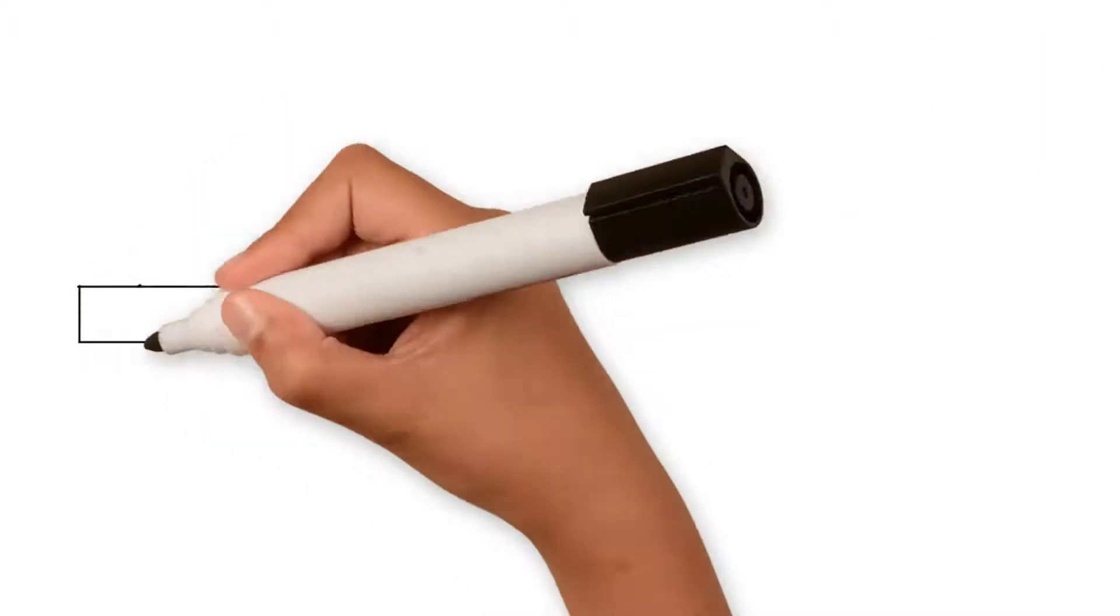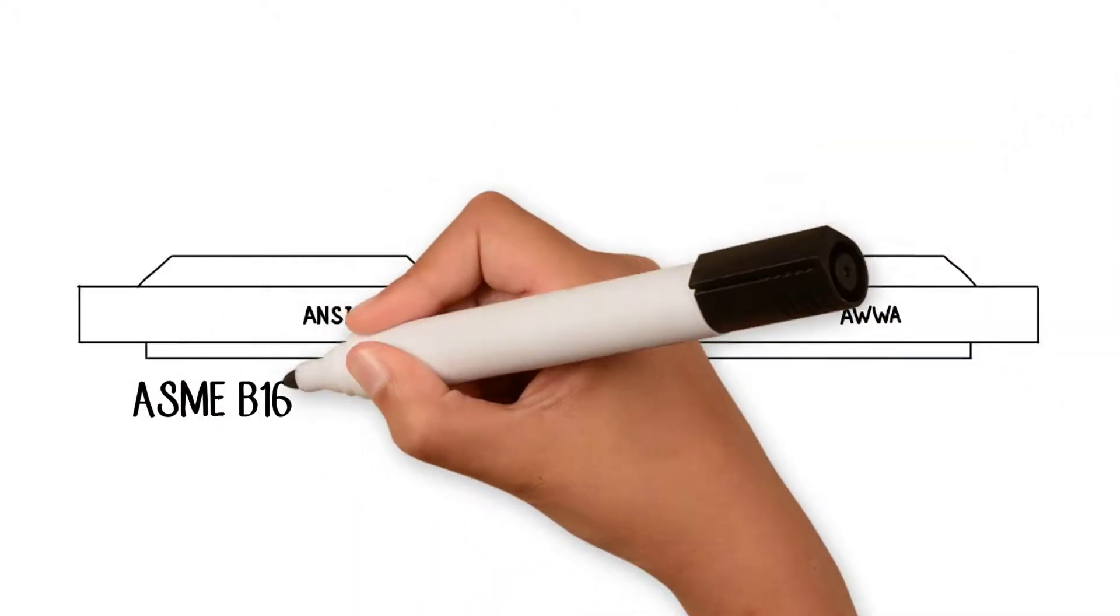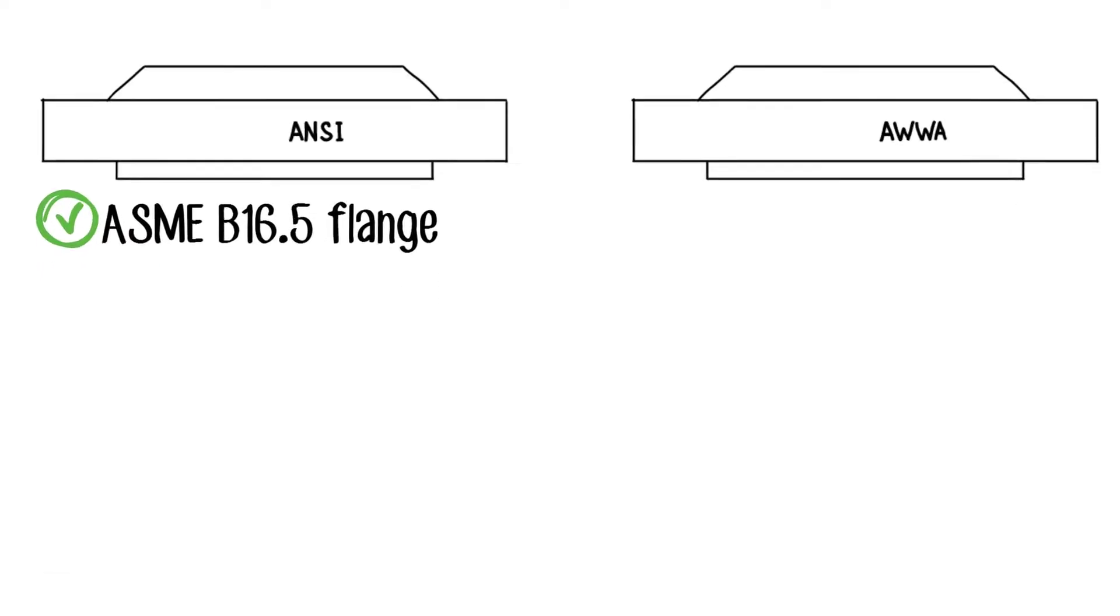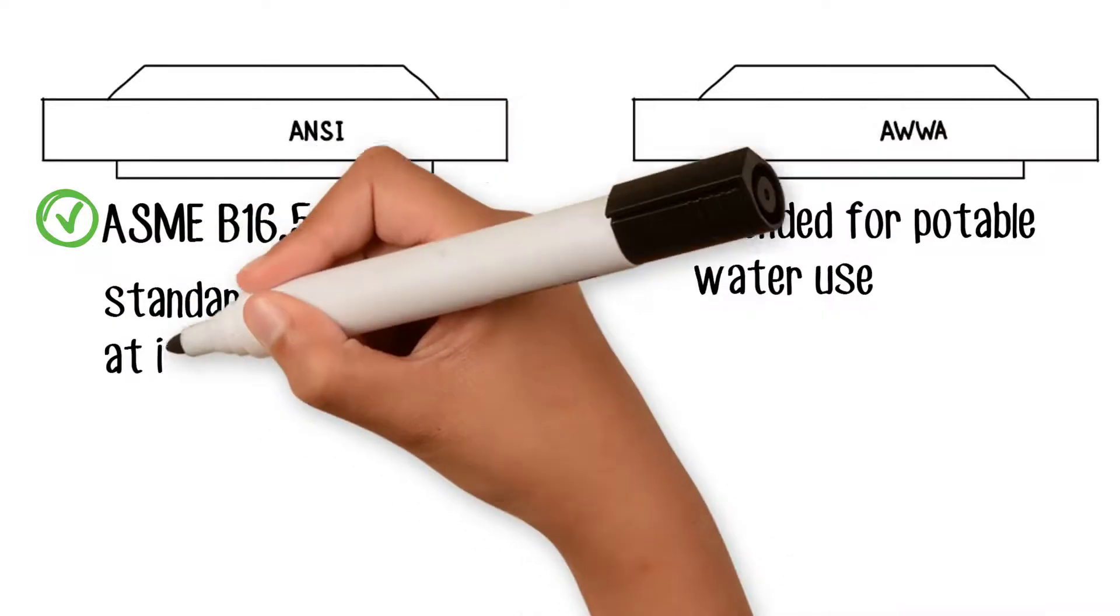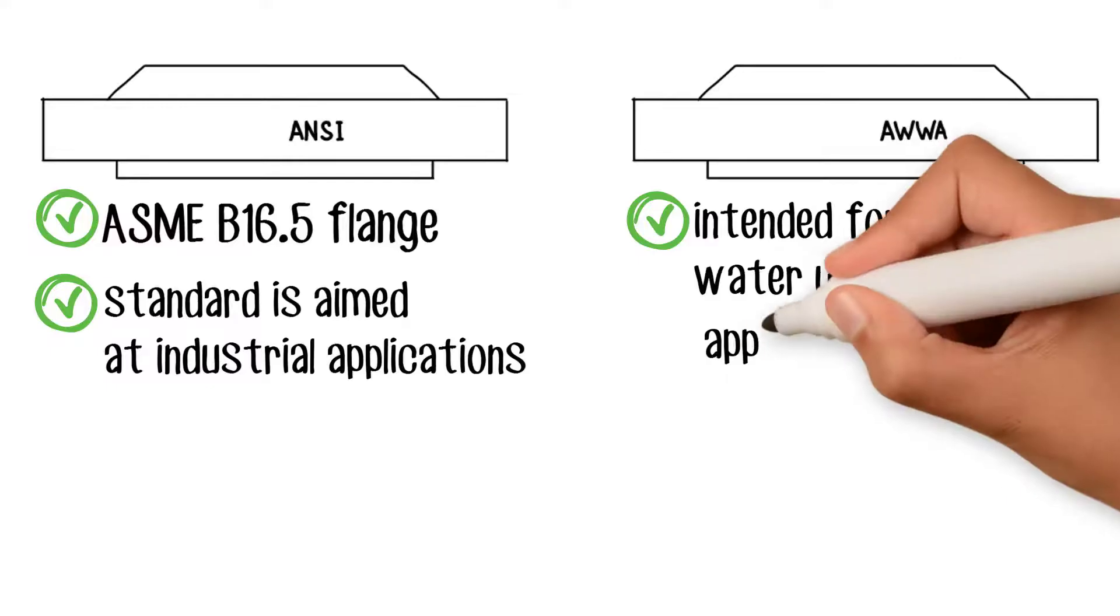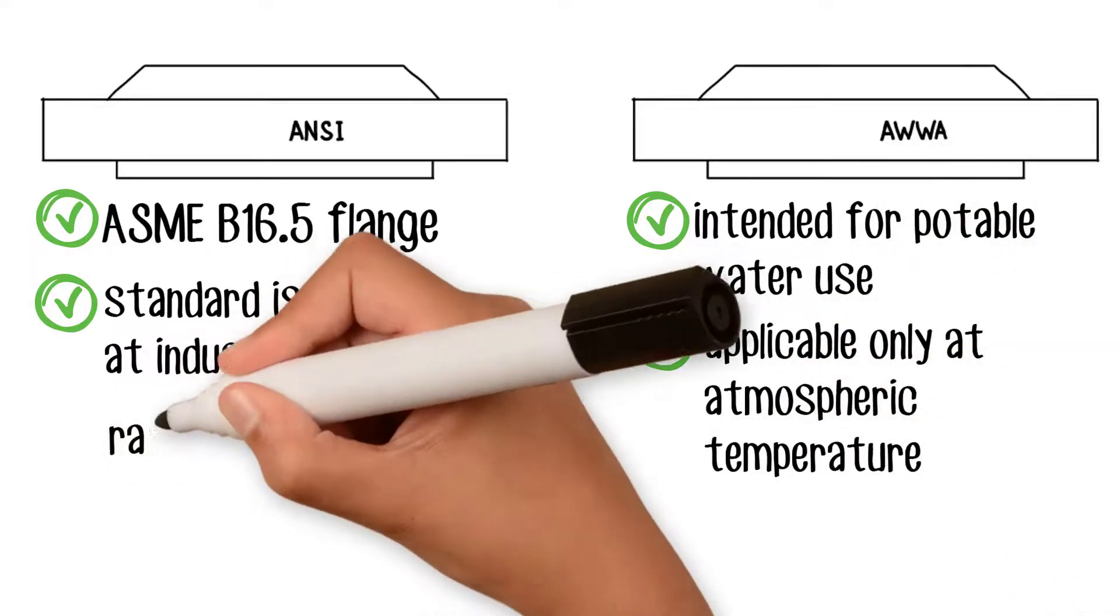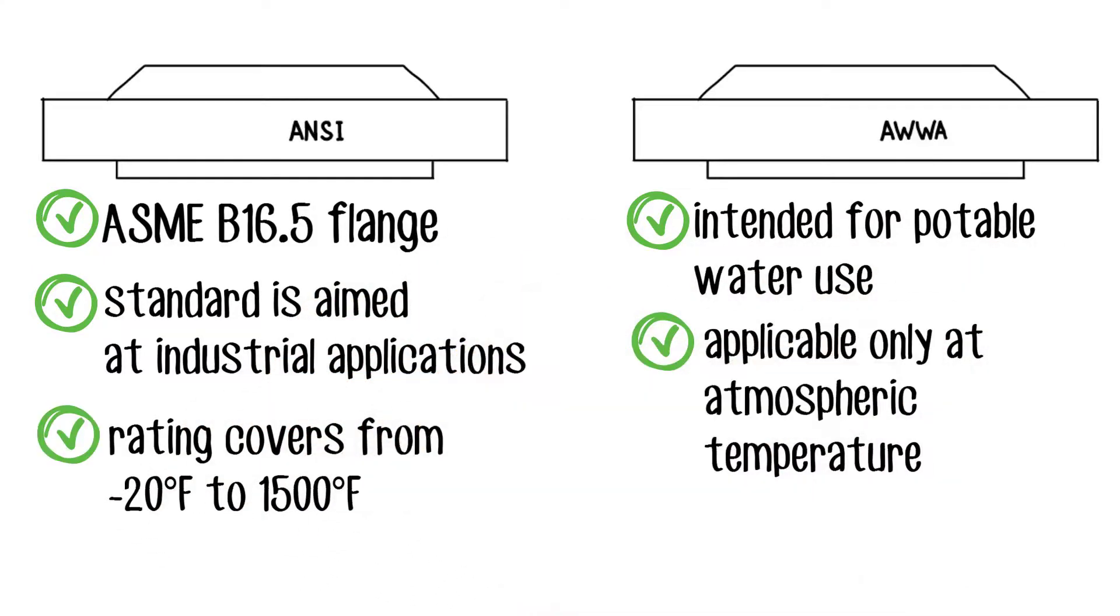What's the difference between ANSI and AWWA flange? ANSI flange means ASME B16.5 flange. ANSI and AWWA standards for flanges differ in several ways. The AWWA standard is intended for potable water use, whereas ANSI standard is aimed at industrial applications. AWWA flange ratings are applicable only at atmospheric temperature, whereas ANSI ratings cover from minus 20 degrees Fahrenheit to 1500 degrees Fahrenheit.